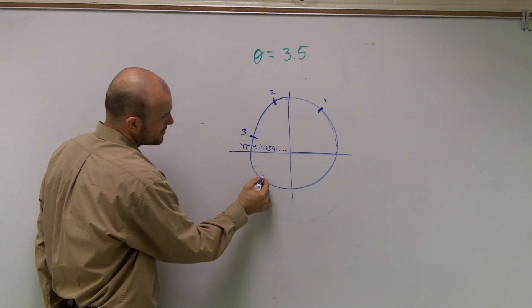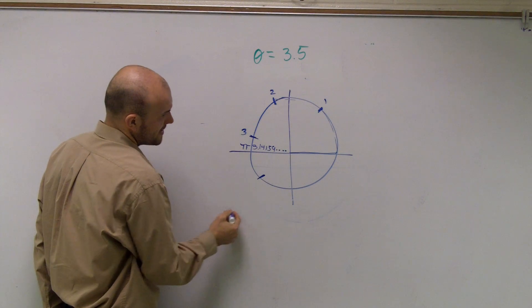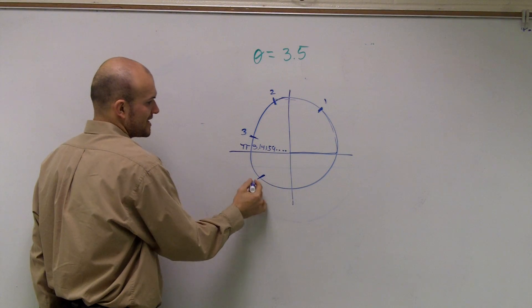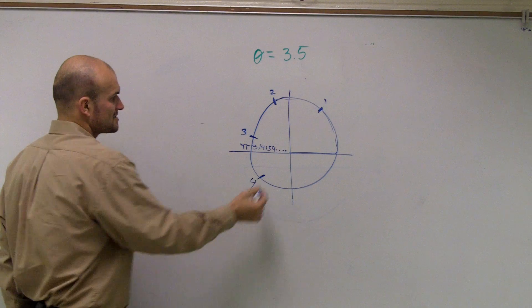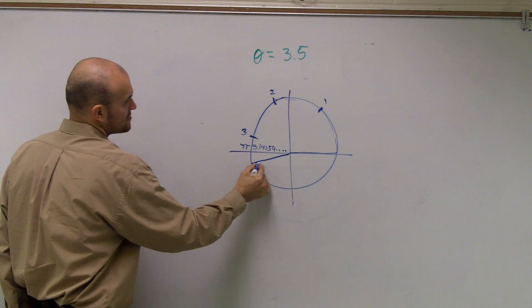So therefore, probably 4 is probably like right there, so that's like the 4th radian. So if they say I have 3.5 radians, my angle is probably right here.